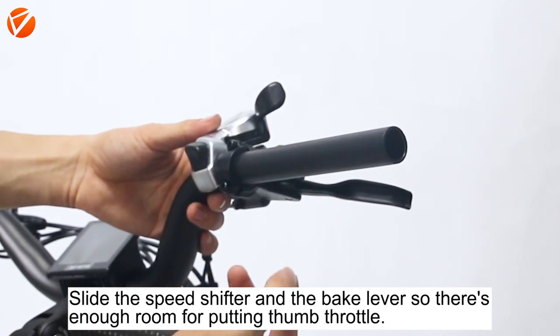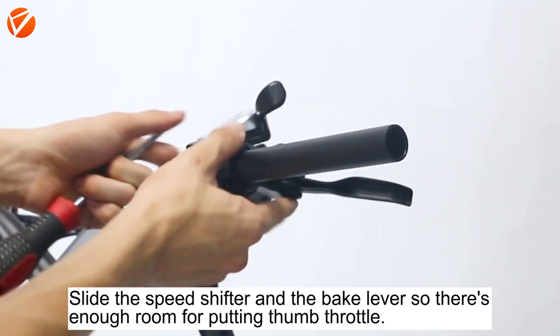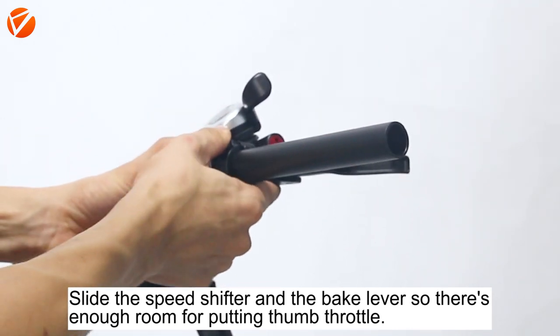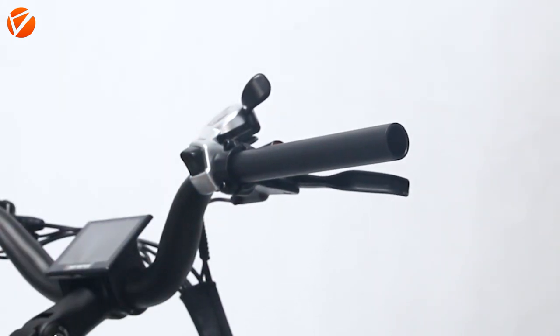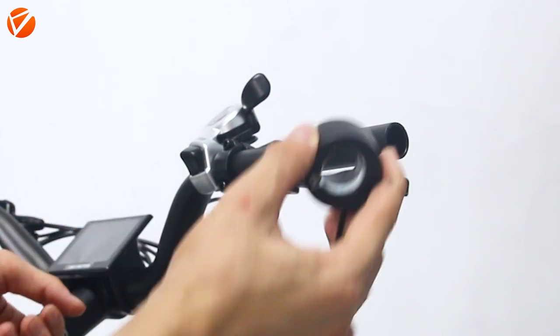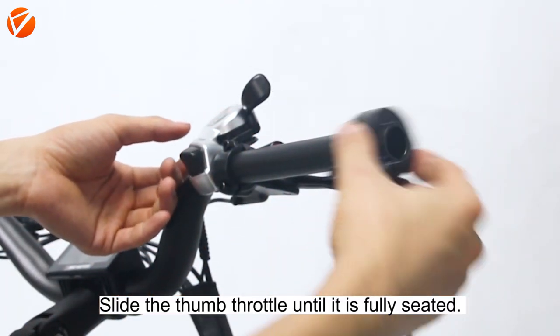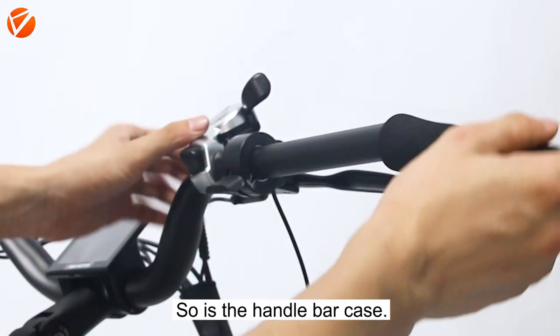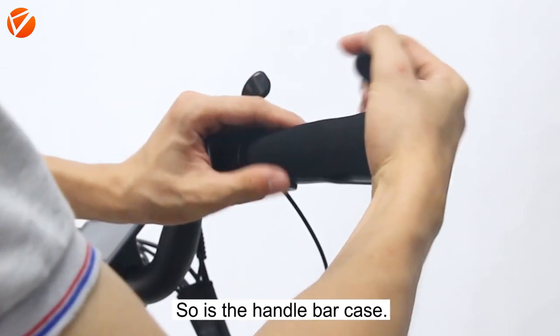Slide the speed shifter and brake lever so there's enough room for putting the thumb throttle. Slide the thumb throttle until it is fully seated. So is the handlebar case.